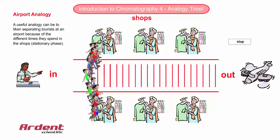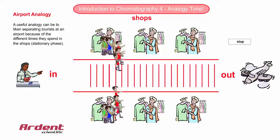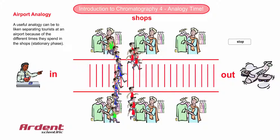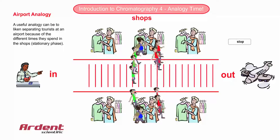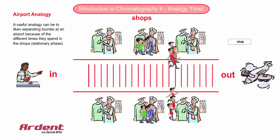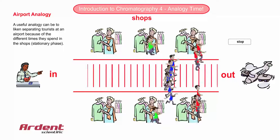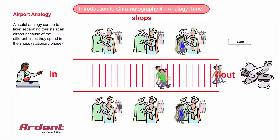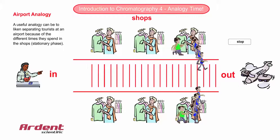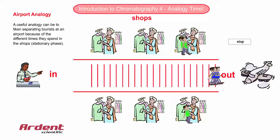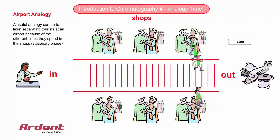Hopefully you can see the similarity here to chromatography. The moving walkway is the mobile phase and the shops, well they're the stationary phase. The time the tourists spend in the shops determines how long it takes them before they get onto the plane. The flip side of all this is that all the tourists, regardless of which colour they are, spend equal amounts of time on the moving walkway.